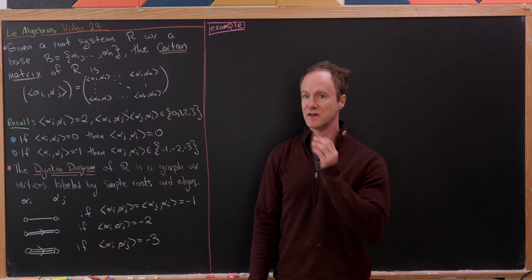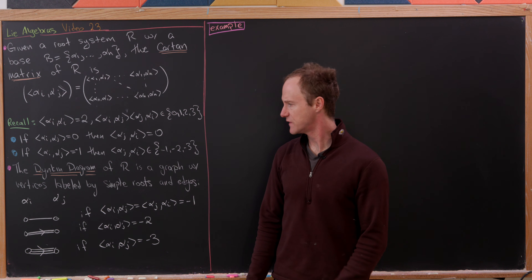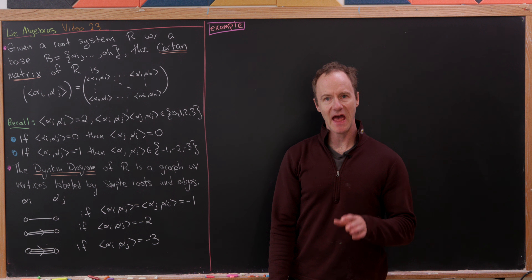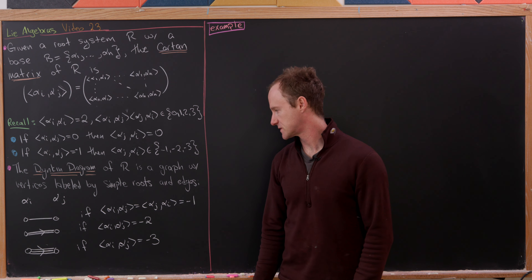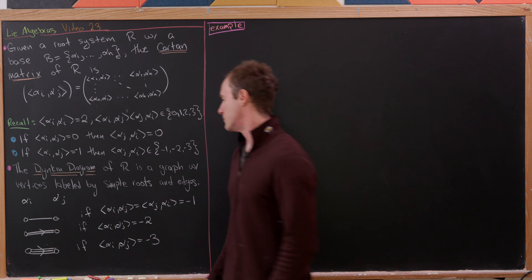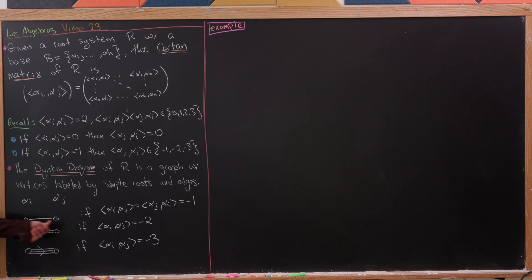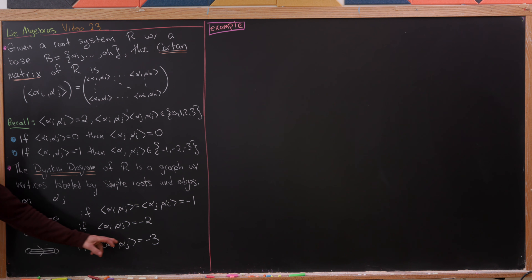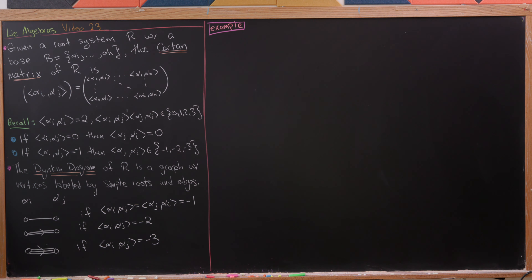Let's also look at the notion of a Dynkin diagram. That's going to be a graph where the vertices are labeled by simple roots, and the edges satisfy the following rules. If alpha i, alpha j is 0, there's no edge between the vertices. If it's negative 1, there's a simple edge. If alpha i, alpha j is negative 2 (and the switch is negative 1), you've got a double edge with an arrow pointing from alpha i to alpha j. And if you have a negative 3, then you have a triple edge with the arrow pointing from alpha i to alpha j.